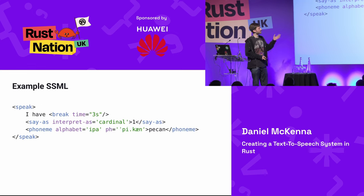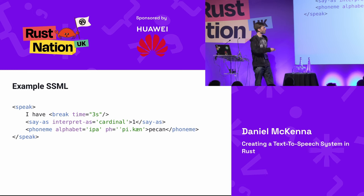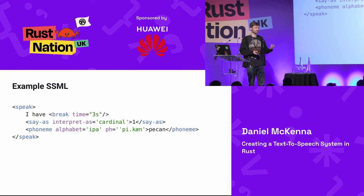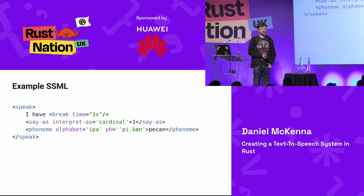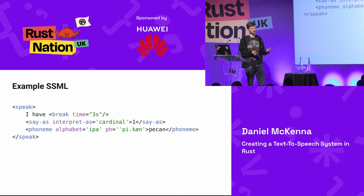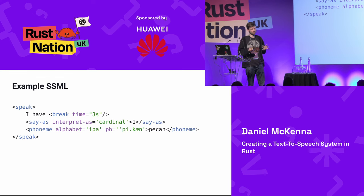Here I have some example SSML. It can add a break, tell you how to interpret a number, and give a phonetic transcription. You can do other things like speed, volume, specify language if you're switching languages, or even add audio files — they initially thought about using this in websites for accessibility or subtitling. So we're going to do SSML parsing and normalizing, and this is the first bit of Rust code.